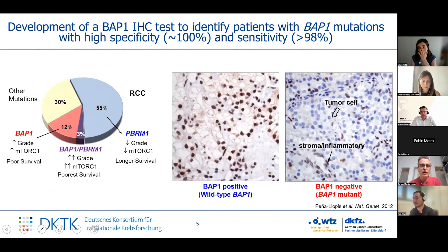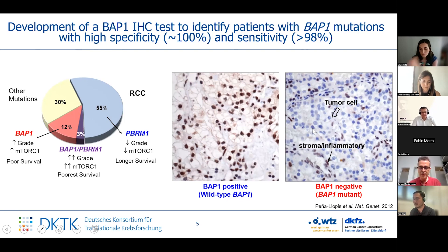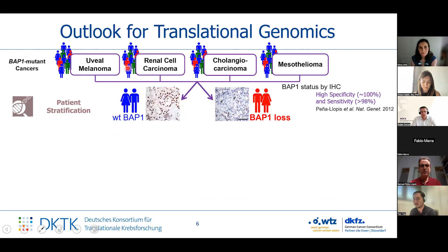We developed an immunohistochemistry test that works very nicely in renal cell carcinoma but also in other tumor types, allowing us to identify patients who have loss of BAP1. This test is highly sensitive and specific — we can identify them with more than 99% sensitivity and specificity — and we can use it for stratifying patients of different cancer types, including cholangiocarcinoma.